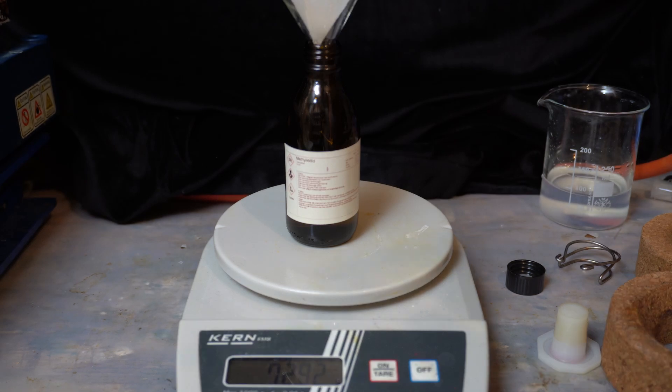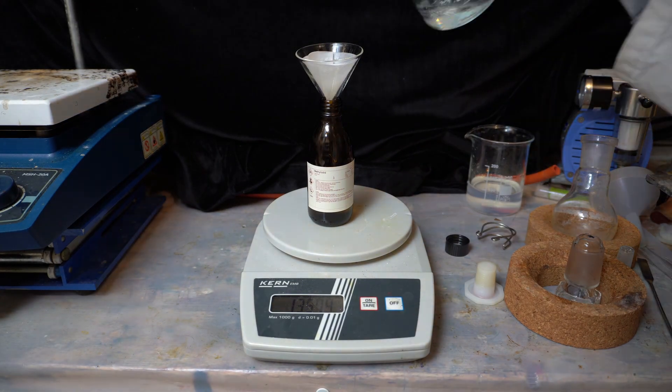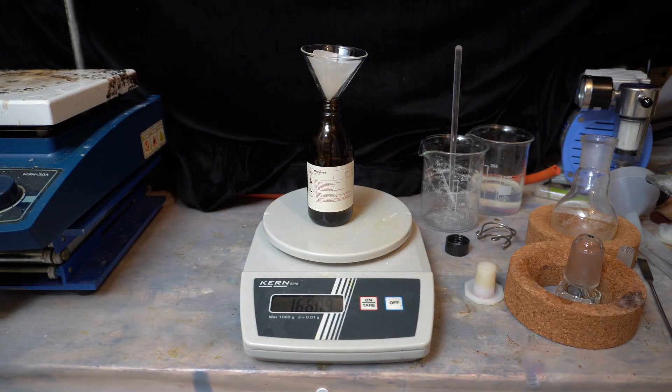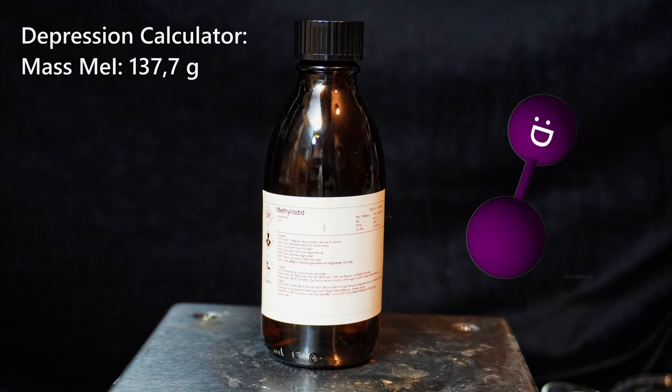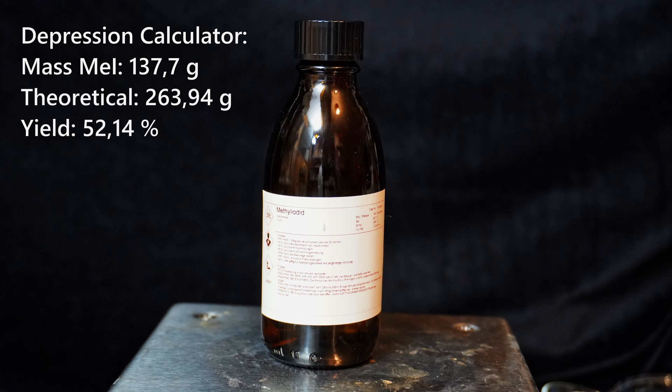I now filter the product directly into a weighed and labeled storage bottle, and we get to calculate the yield. We have collected 137.7 grams of methyl iodide, which might sound like a lot, but don't forget that 123 grams of that come from the iodine alone. This also means that the yield is rather disappointing at 52%.